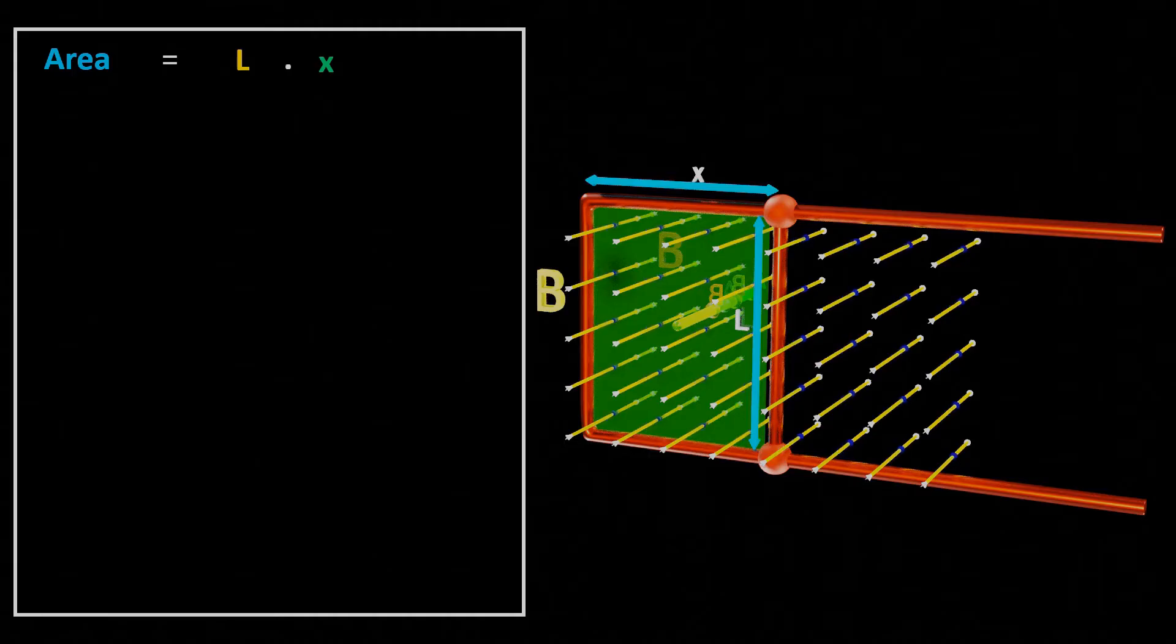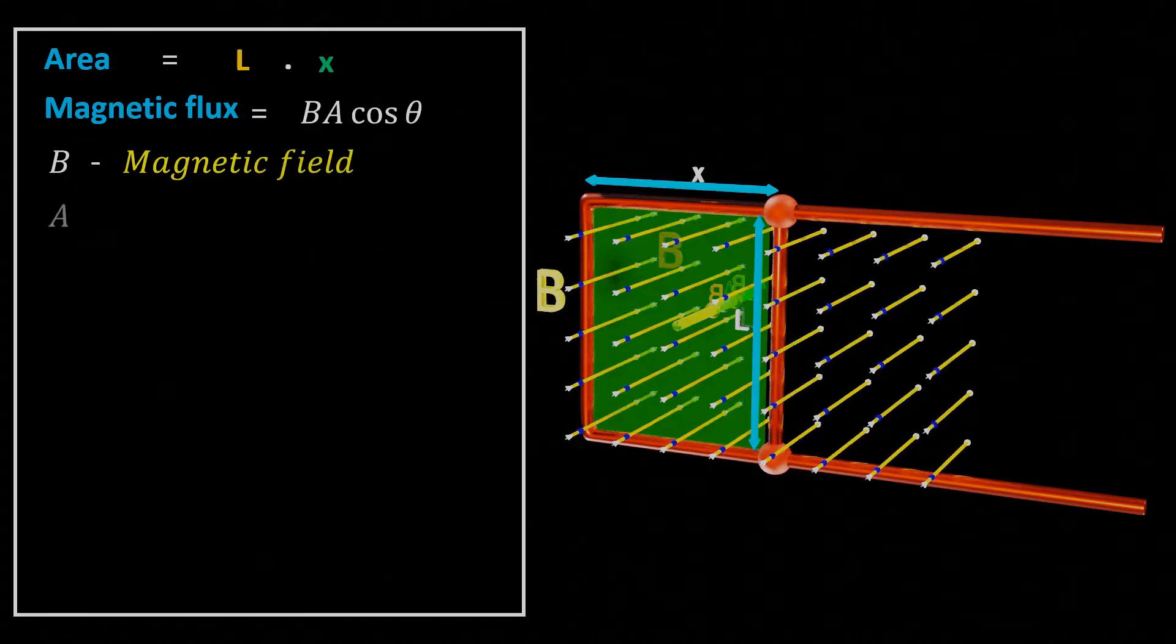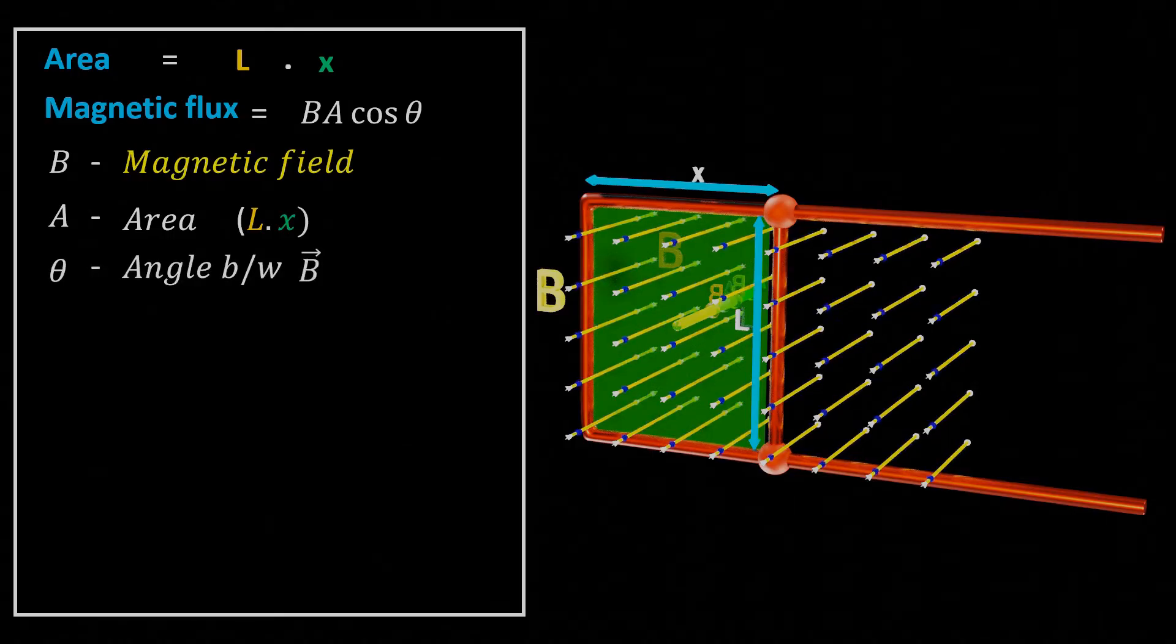Thus, if we want to calculate the magnetic flux, that is the total number of magnetic field lines passing through the area. So, we can easily find it from the formula BA cos theta. Where B is the magnetic field vector, A is the area of enclosed space that is L into X. And theta is the angle between magnetic field vector B and the area vector A.